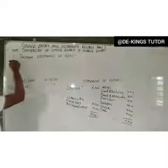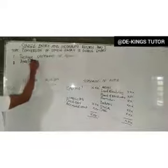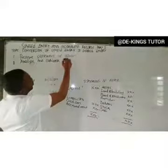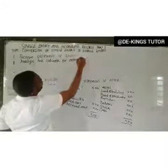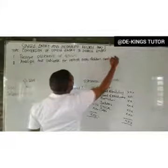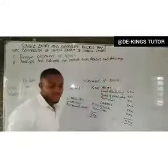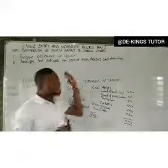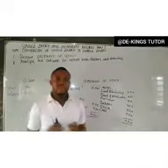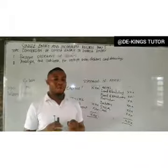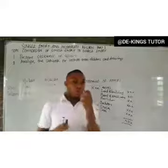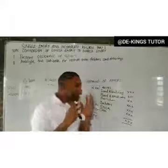The second step is to analyze the cash book for receipts from debtors and drawings. In single entry and incomplete records, you will be given a cash book or a bank statement involving the cash volume of the bank account. Your focus should be on the debit side.